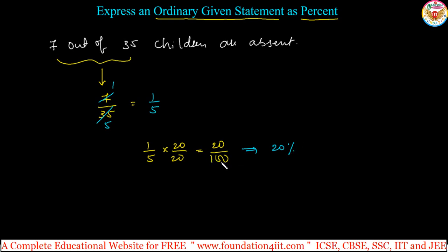To convert any ordinary given statement as percent: first, express the given statement as a fraction; then convert that fraction into an equivalent fraction with denominator 100. This is one method, but every time the denominator cannot always be made exactly equal to 100.